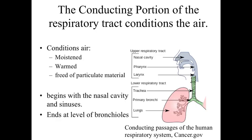The conducting portion of the respiratory tract is involved with conditioning the air. This means producing lots of mucus to moisten the air and trap particulate material. There are also many blood vessels present, especially within the nasal cavity — these blood vessels carry warmth and heat to warm the incoming air. By warming and moistening the air and trapping particulate material, we condition the air beginning at the nasal cavity and sinuses, ending at about the level of the bronchioles.